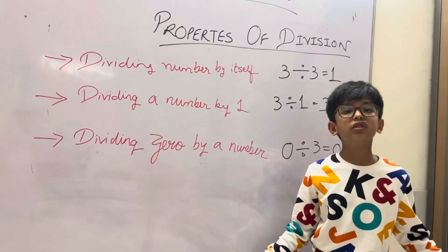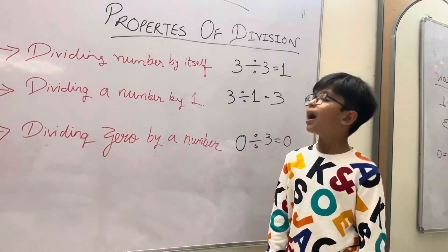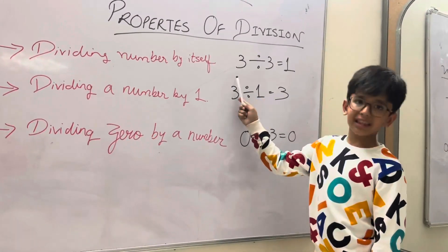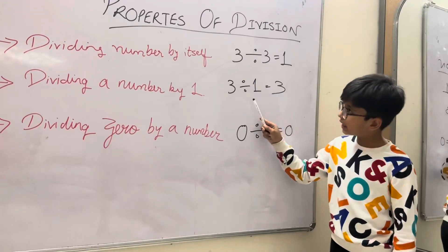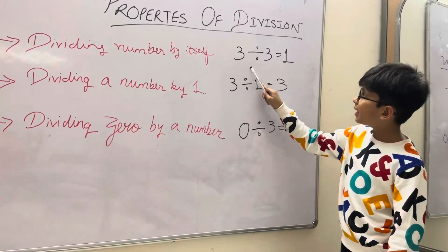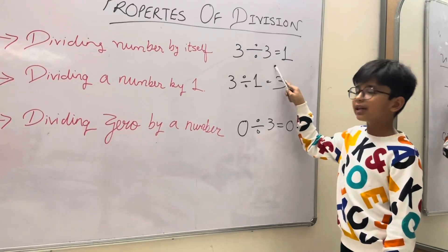Example is share 3 cakes equally among 3 persons. So see, we have to write 3 divided by 3 equals 1.